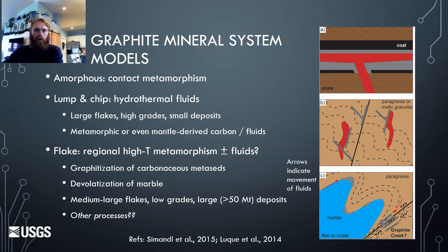Flake graphite deposits can also form in high-temperature regional metamorphic terrains, either from simple graphitization of organic carbon, de-volatilization of marble, or potentially other processes involving hydrothermal fluids that are not well understood. Lump-and-chip vein deposits are generally small, whereas flake deposits are medium to large, with lower grades and higher tonnages. The goal of our research was to understand which of these processes were dominant at Graphite Creek.